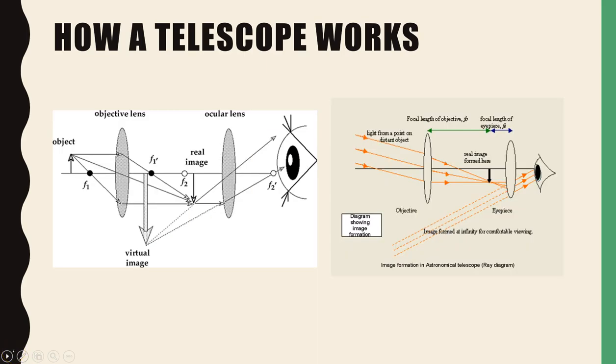So a telescope, how does it work? Well a telescope works with, we have our object, it may be the star, it may be the planet, whatever it is. That object will emit light and that light will be collected at the objective lens.